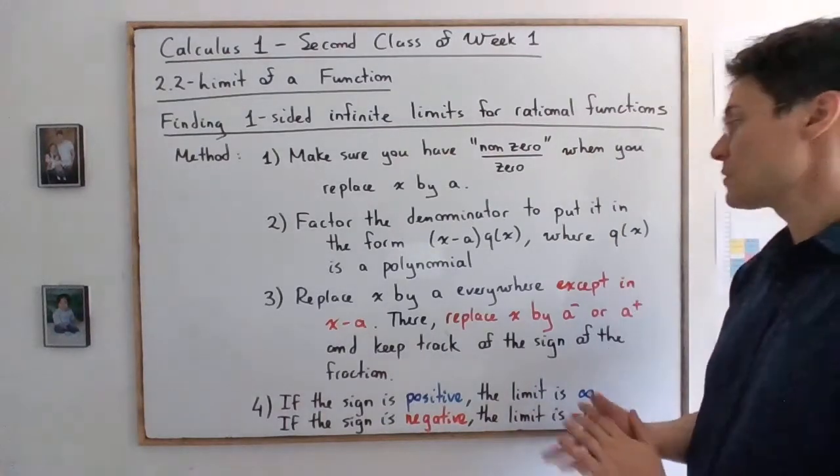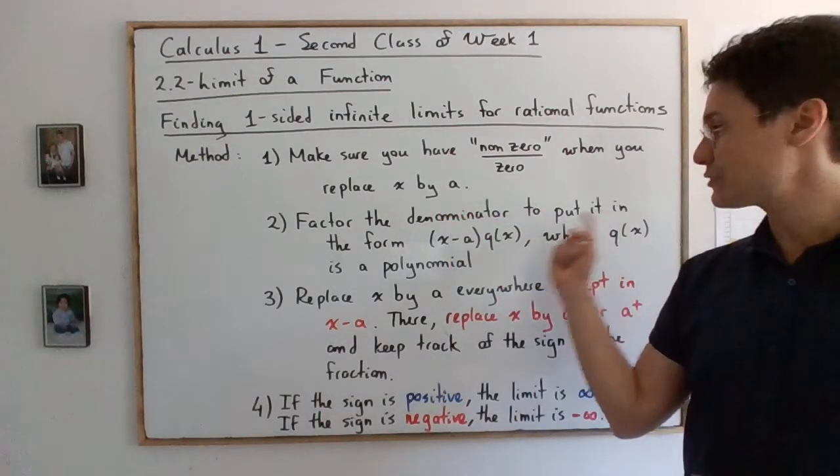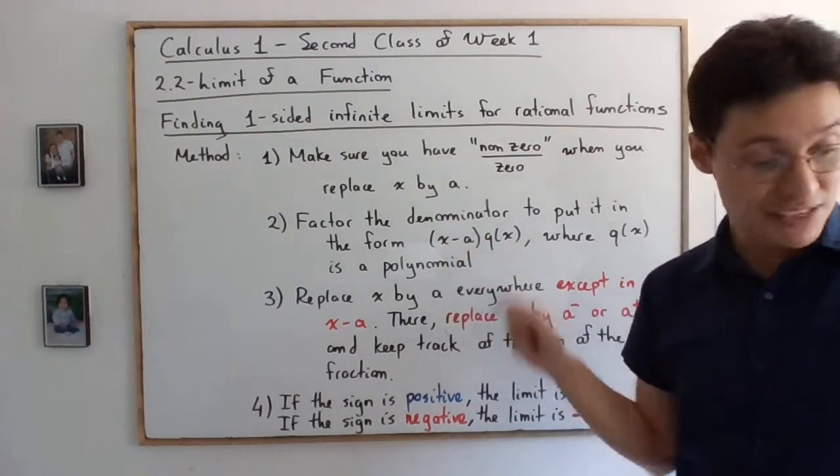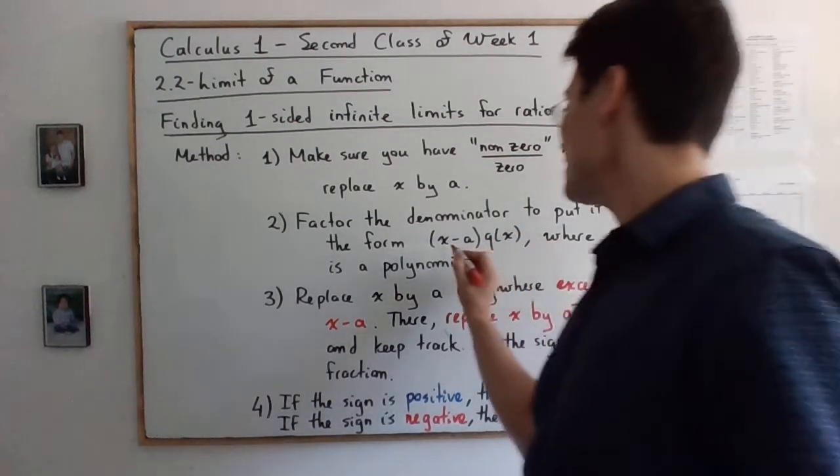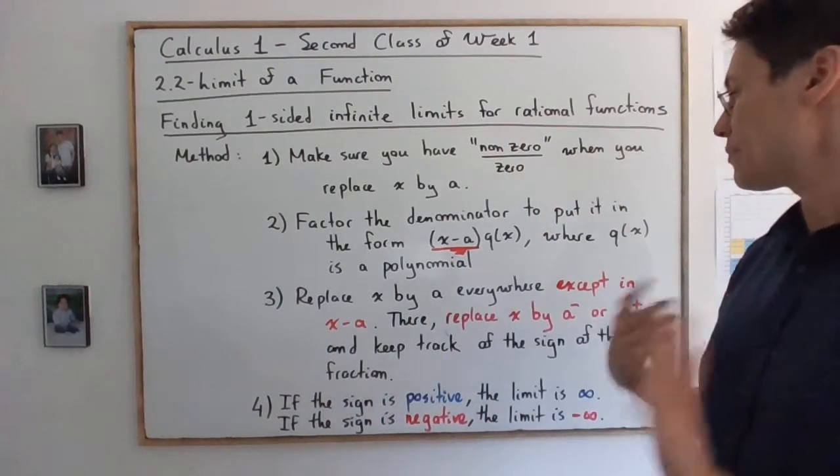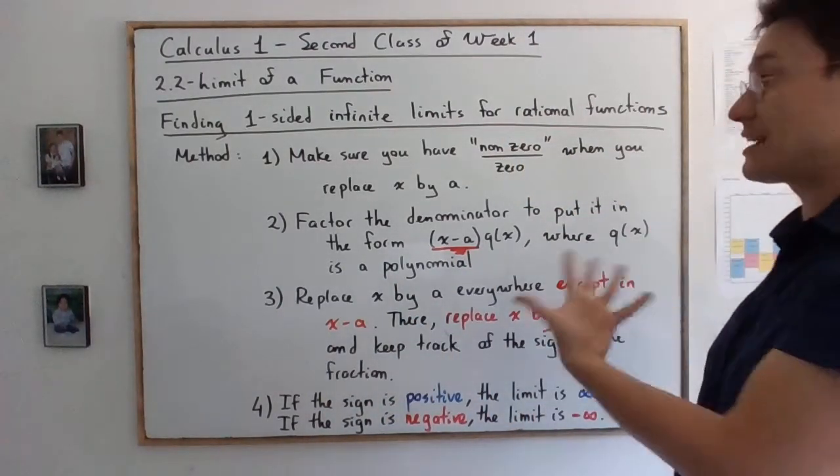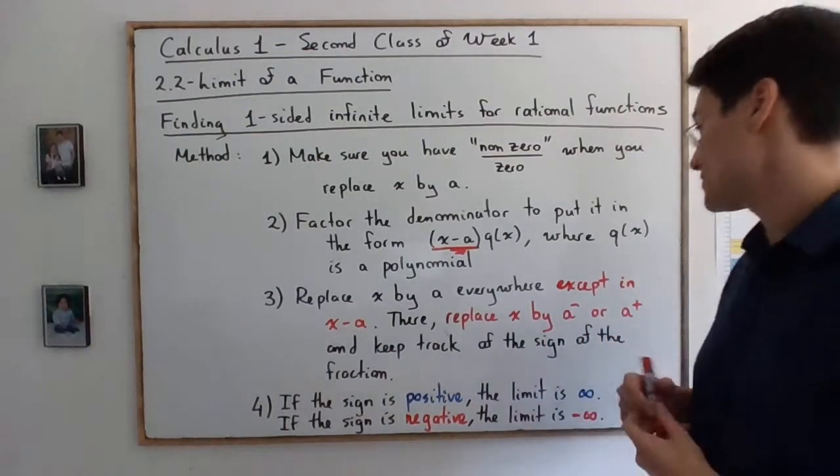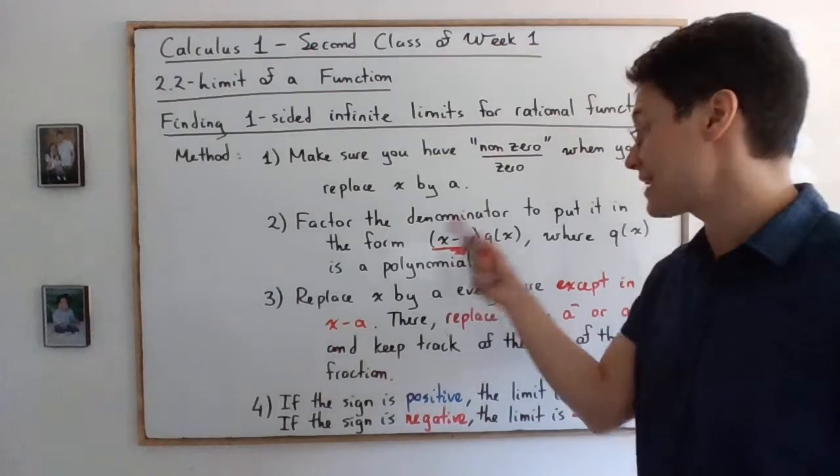Step number two, you will factor the denominator to put it in this form. You want to extract the factor that's giving you the zero. So typically it's gonna be x minus a, because the denominator is gonna be a polynomial so you'll be able to factor it most of the times in a way that you have at least x minus a.